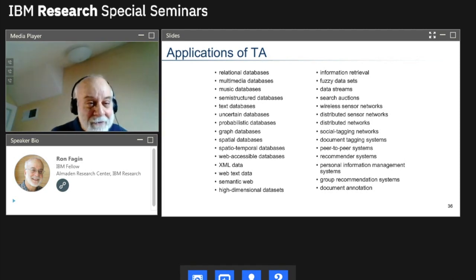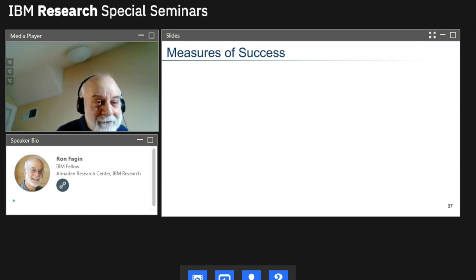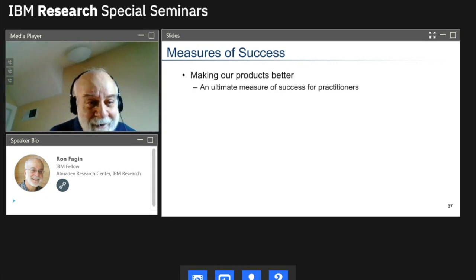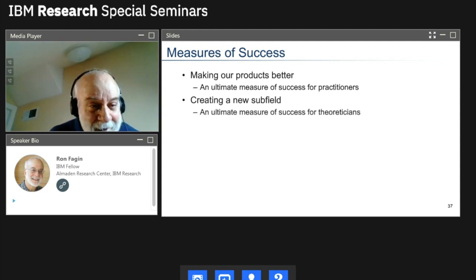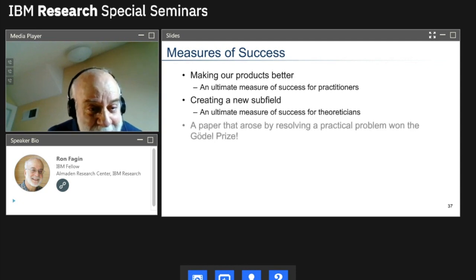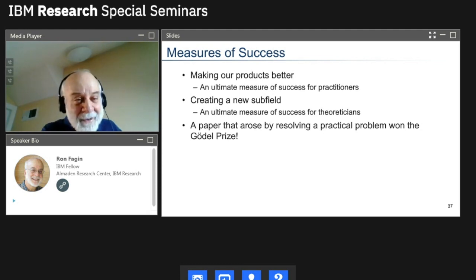So it's got a gazillion applications. One reason why it's been so influential and one reason for winning the Gödel Prize is people have used it all over the place in many, many, many different applications. Measures of success, well, making our products better, that's certainly an ultimate measure of success for a practitioner. Creating a new subfield, that is an ultimate measure of success for a theoretician. And so we did both of these. And if I want to make an argument to a theoretician, you will do better theory if you just talk to those practitioners. I cannot make a stronger argument than this. Here's a paper that arose from a very practical real world problem, and by golly, it won the Gödel prize. What more could you ask? I mean, that's the strongest argument I could get to a theoretician. Talk to those messy old practitioners.